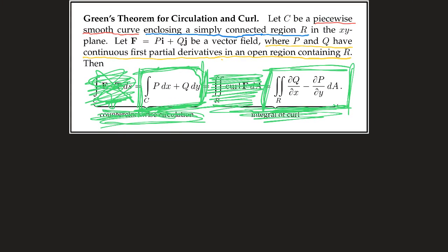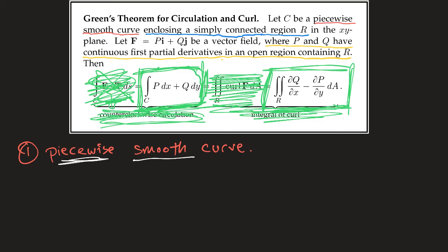The first hypothesis is the easiest. A piecewise smooth curve means the curve is differentiable with nonzero derivative on each piece. We have this for any contour C, so the first hypothesis is automatically satisfied.